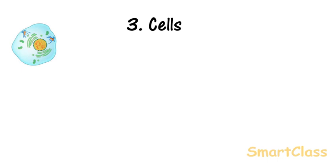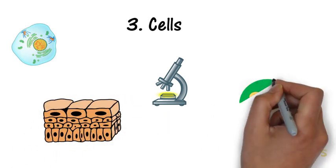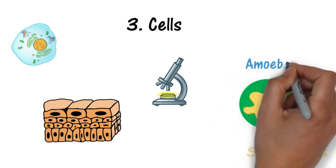A cell is the smallest living part of a living thing. Living things are made up of large numbers of cells. Cells are very small and can be seen only through a microscope. Our body contains millions of different types of cells. Some small microorganisms are made up of a single cell, like amoeba.